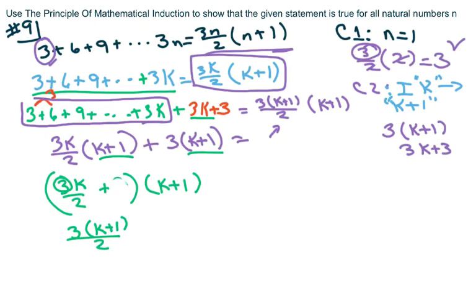This should have been, sorry, I messed up here. I think something was off. So this is when you distribute, you get 3k plus 2. Oh, never mind. I did it right. So plus 3, and then you have k plus 1. So these match up.